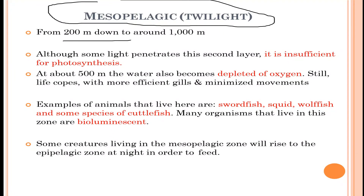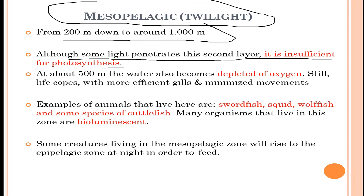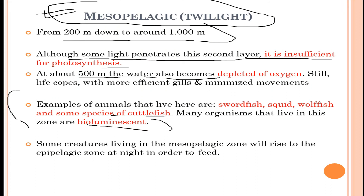The second layer is the mesopelagic zone, the twilight region, from 200 to 1000 meters. Although some light penetrates this layer, it is insufficient for photosynthesis. At about 500 meters the water also becomes depleted of oxygen. Life copes with more efficient gills and minimized movements. Examples include swordfish, squid, wolf fish, and cuttlefish. Many organisms here are bioluminescent, and some rise to the epipelagic zone at night to feed.